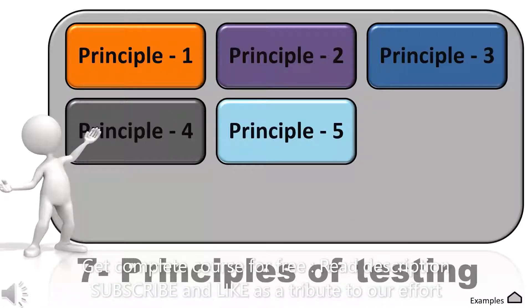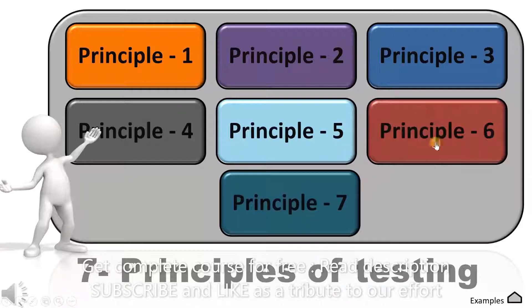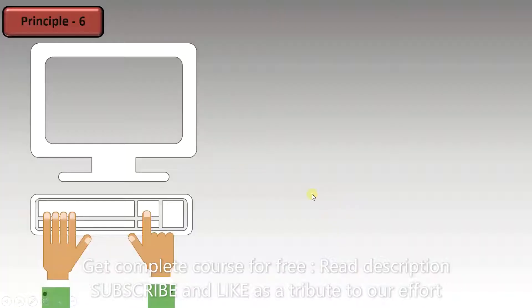In this video, we will cover the last two principles, 6th and 7th. Let's start with principle 6. It states that testing is context dependent. This means that the type of testing will depend upon the kind of product being tested. This is why testing is context dependent.